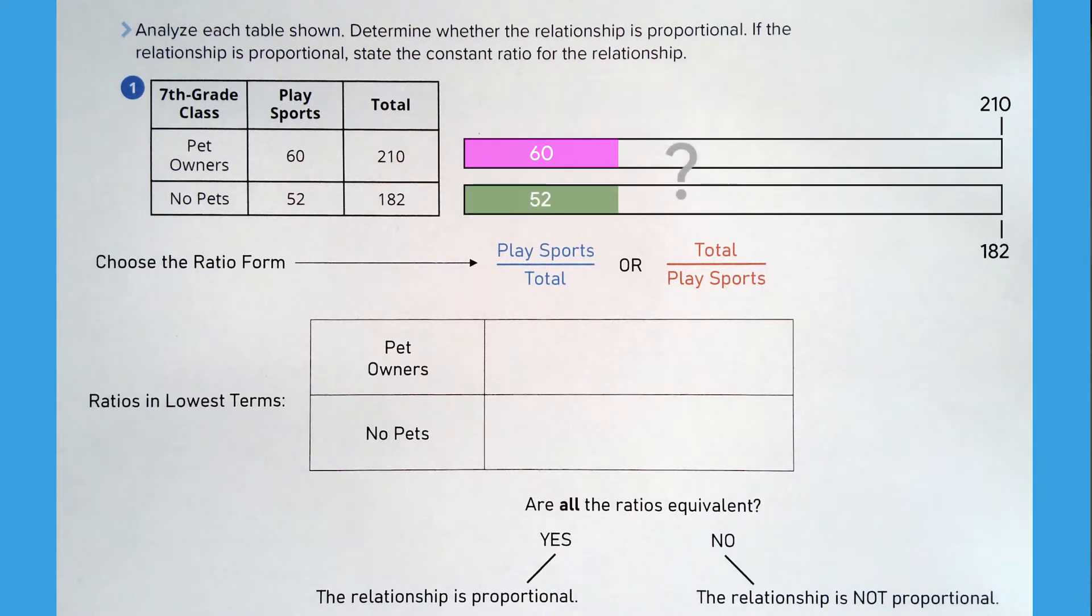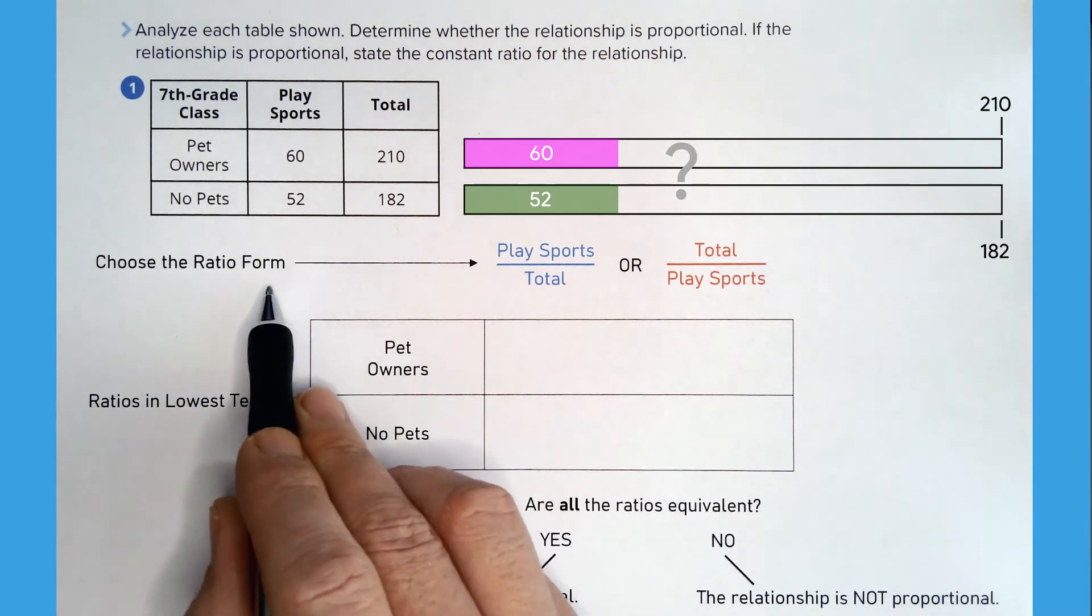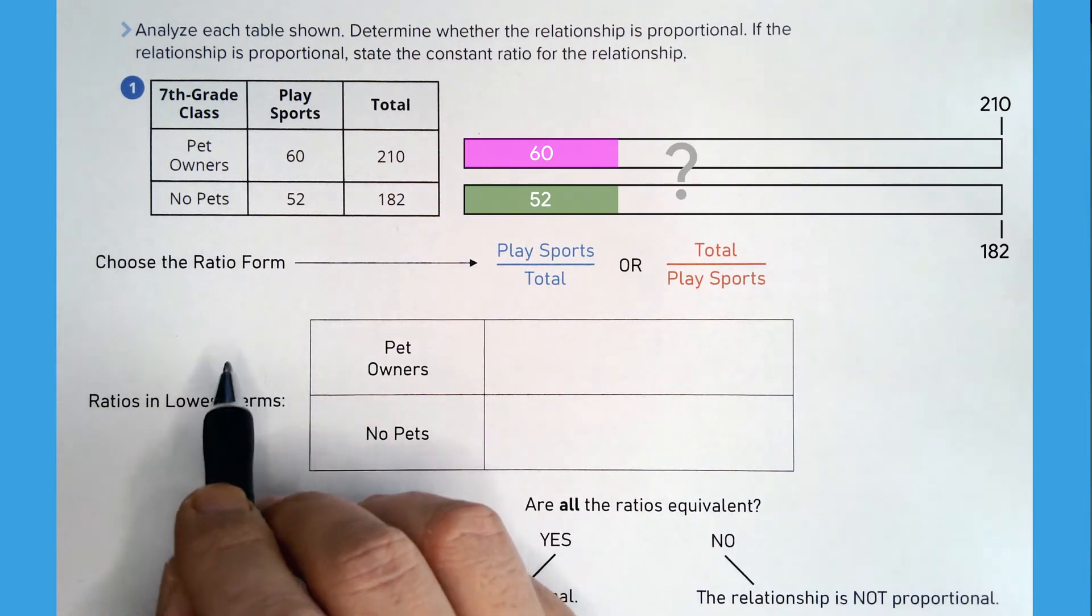Let's write the ratios in lowest terms so that we can compare them. But first we need to make sure that we write both ratios in the same form. So choose a form first. I'll choose the ratio form play sports to total.